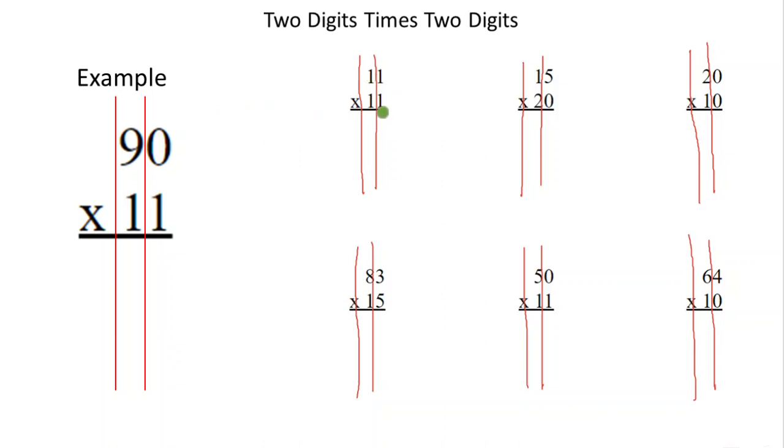So 11 times 11. 1 times 1 is 1, 1 times 1 is 1, 1 times 1 is 1. But wait, I should always put that 0 here so I know where to put that 1 right here. So 1 times 1 is 1. Add it up: 1, 2, 1. There you go.